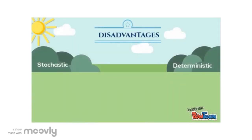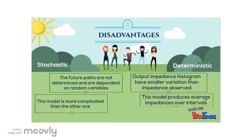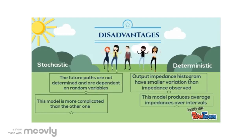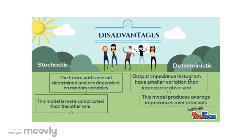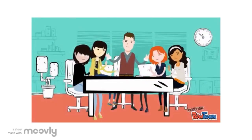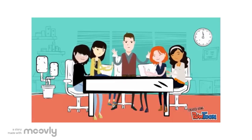How about the disadvantages of both? Oh, I'd like to give it a try too. In stochastic models, the future paths are not determined and are dependent on random variables. In deterministic models, output impedance histograms have smaller variation than impedance observed. You got it!